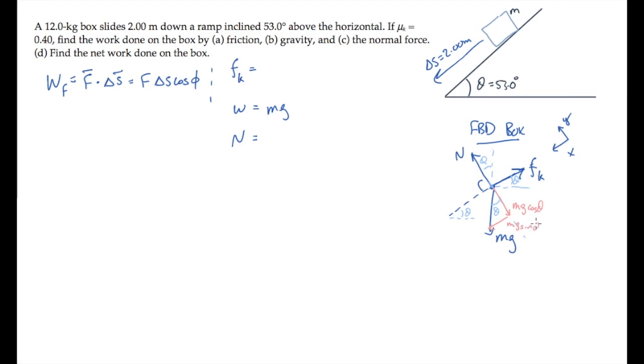Now when we sum forces in the y direction and set it equal to ma, we get the normal force minus the y component of weight, mg cosine theta, and those equals zero because there's no acceleration in the y direction. That tells us that the normal force is mg cosine theta.